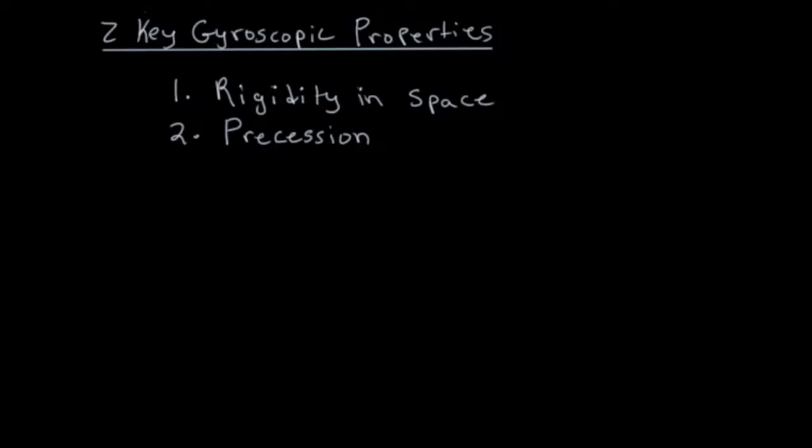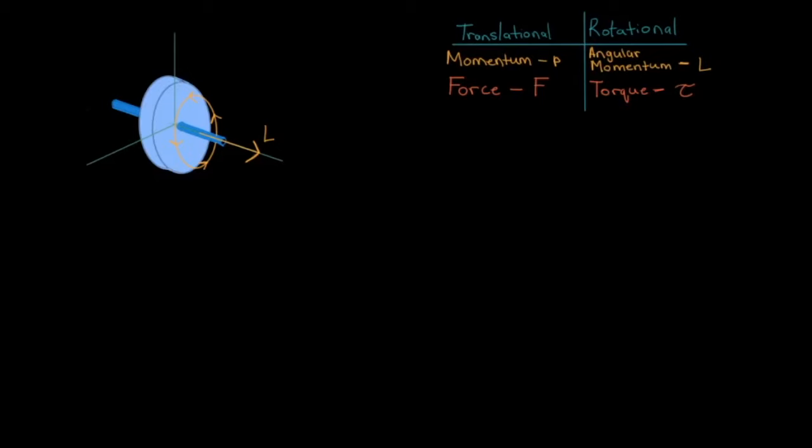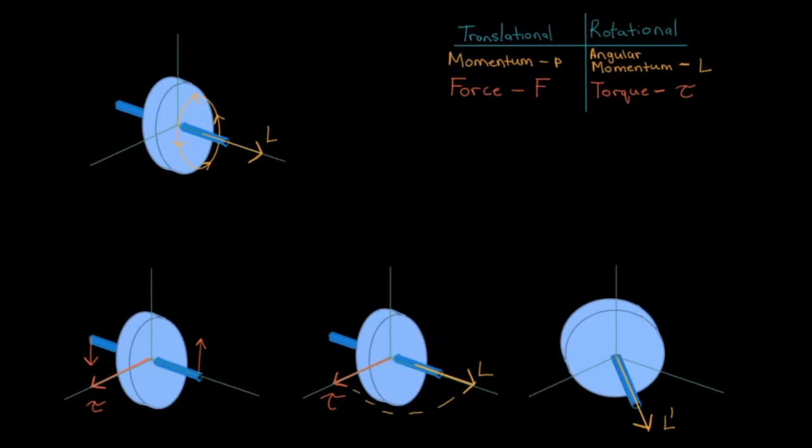Now what about precession? Well, there's a bit more to it, but by the end of this video the concept should be pretty concrete. Consider this video here — a wheel is spinning on its axle while at the same time being suspended on a piece of string. This seems impossible and we wonder why it doesn't just fall down. To understand this, it's just a simple case of knowing where the vectors are and how they behave. We'll come back to this example at the end of the video, but first let's start with the basics.